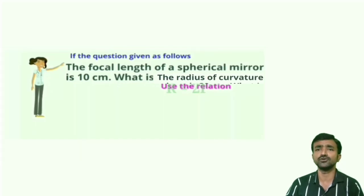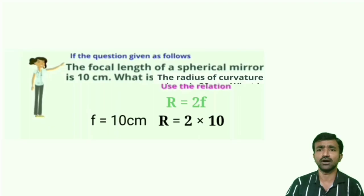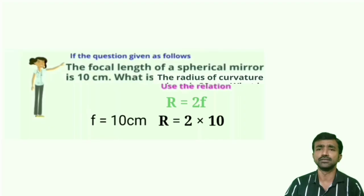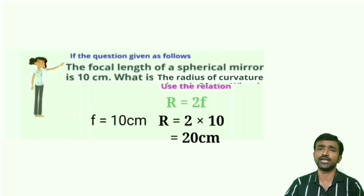Now use the relation R equal to 2F. Note down the given value F equal to 10 centimeters, then substitute: R equal to 2 into 10. Taking the product gives R equal to 20 centimeters. So the radius of curvature of the given spherical mirror is 20 centimeters.